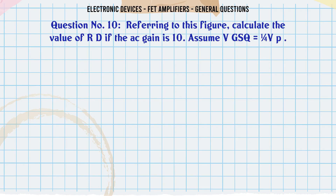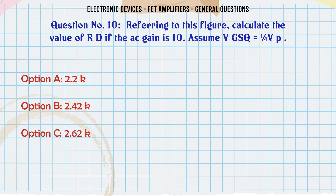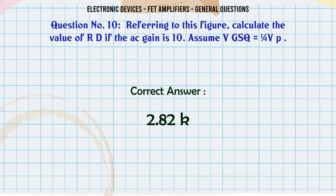Referring to this figure, calculate the value of RD if the AC gain is 10. Assume VGSQ = VP. A. 2.2K. B. 2.42K. C. 2.62K. D. 2.82K. The correct answer is 2.82K.